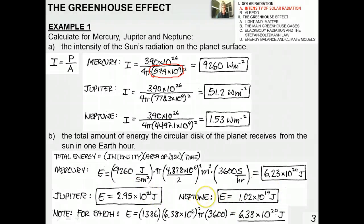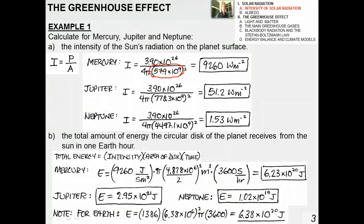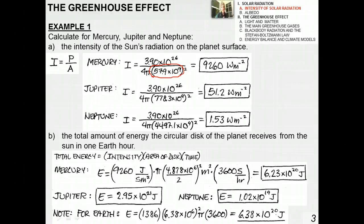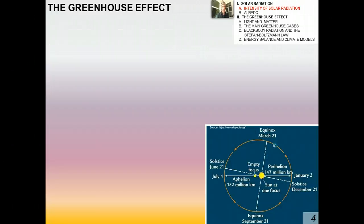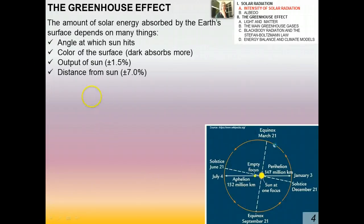For Mercury, the total energy received in one Earth hour is about 6.23 times 10 to the 20 joules. Jupiter receives a bit more and Neptune a bit less, showing that the size of the planetary disk makes a big difference. For Earth, not accounting for clouds or atmospheric conditions, the total energy received from the Sun in one Earth hour is about 6.38 times 10 to the 20 joules — a lot of energy that could be harnessed, which is why the solar energy industry is such a big thing for the future.